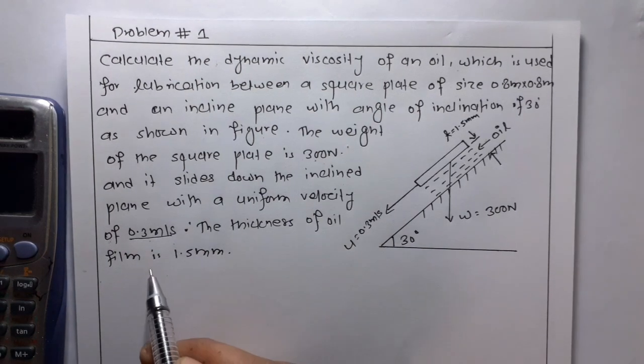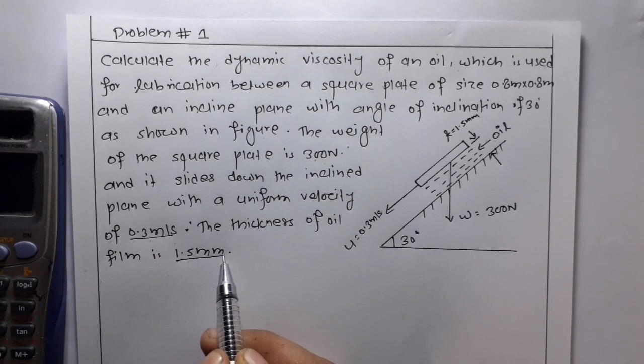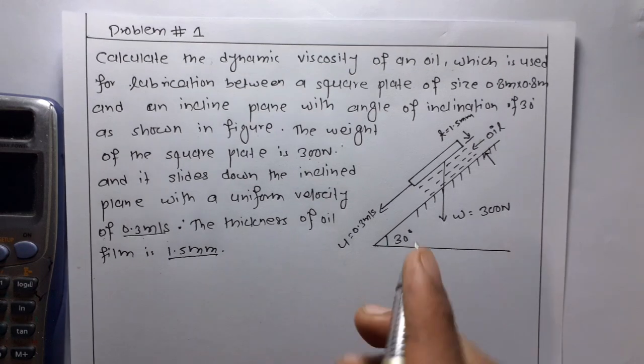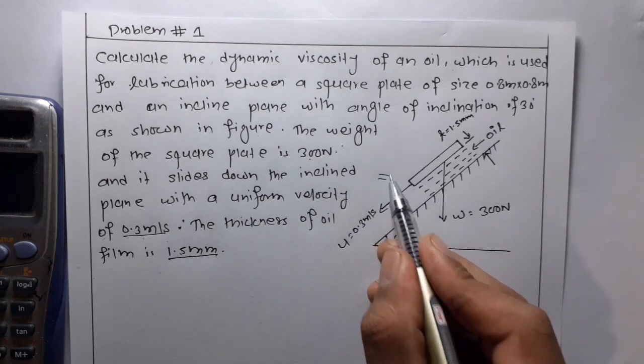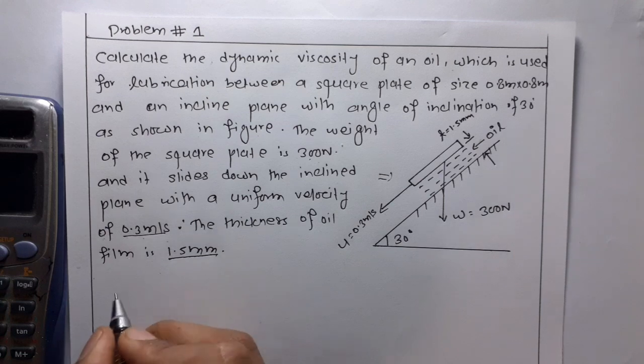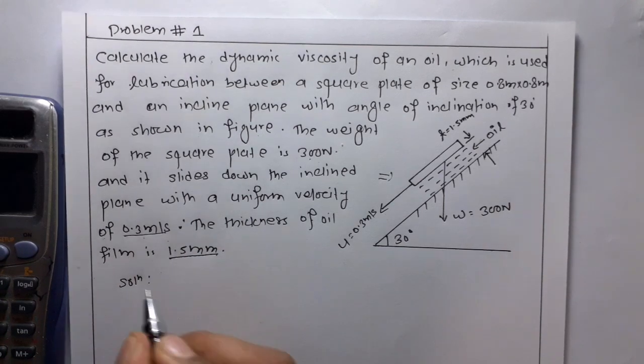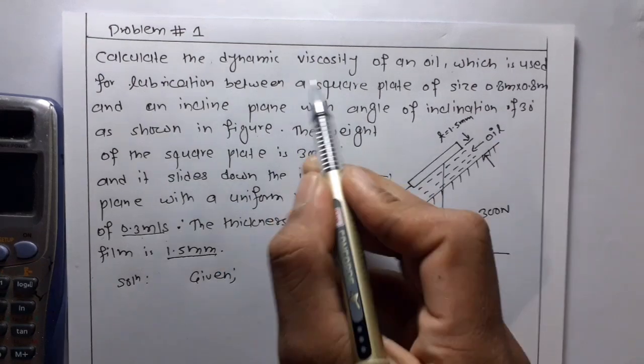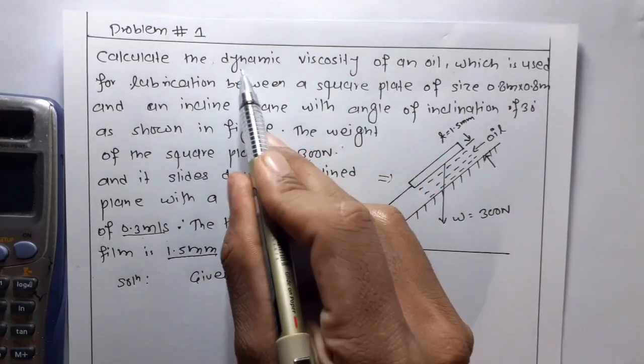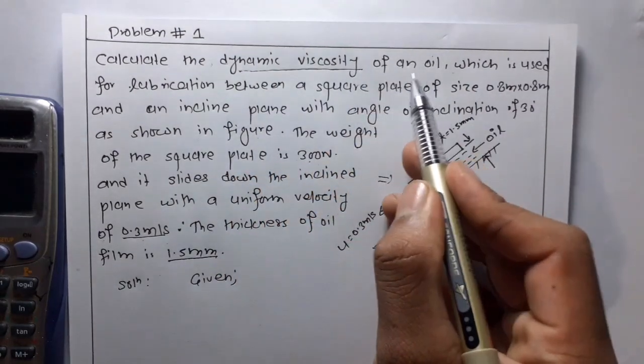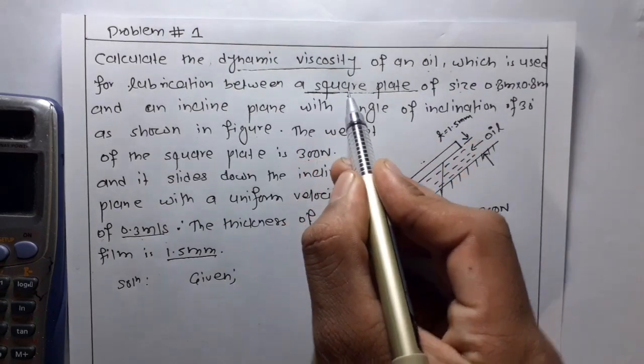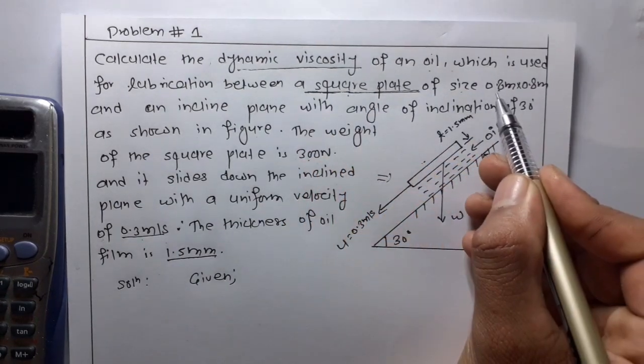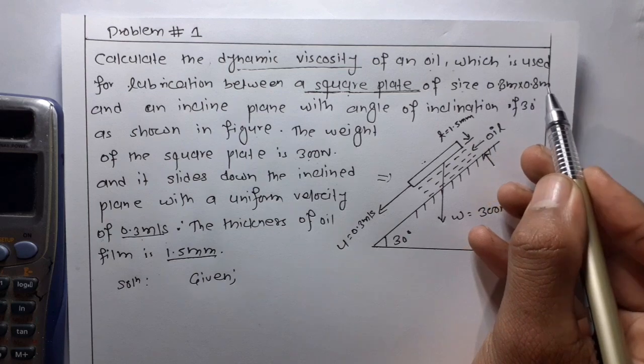The thickness of the oil film is 1.5 mm and this is the figure for this question. Now, for the solution, first given we have to find the dynamic viscosity of an oil and the size of the plate is 0.8 meter into 0.8 meter.